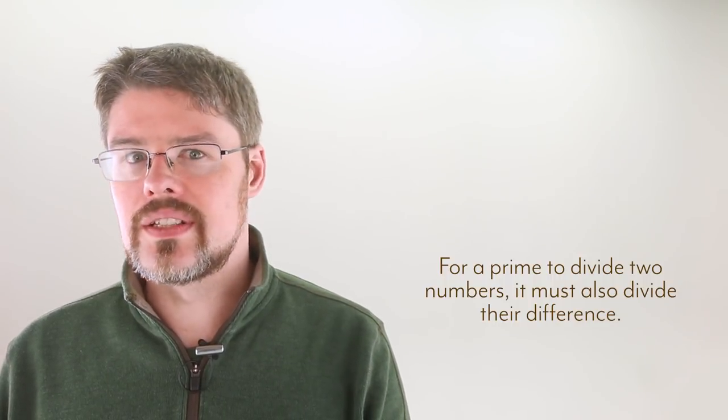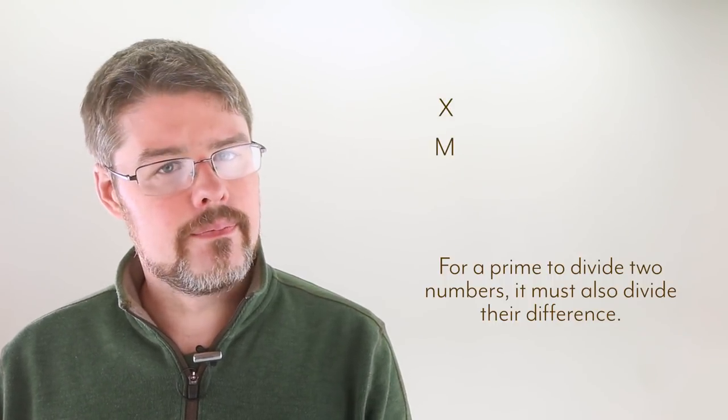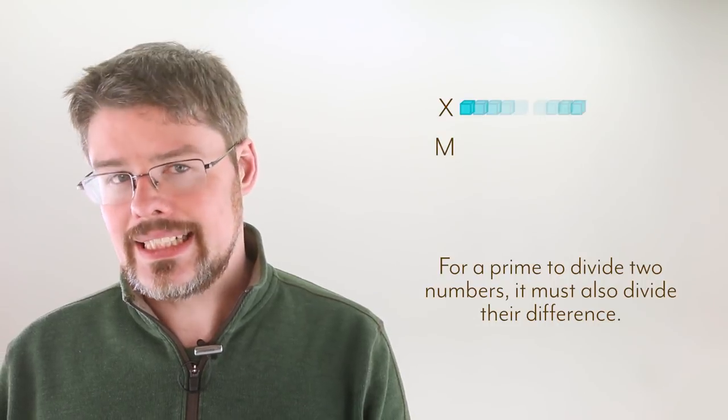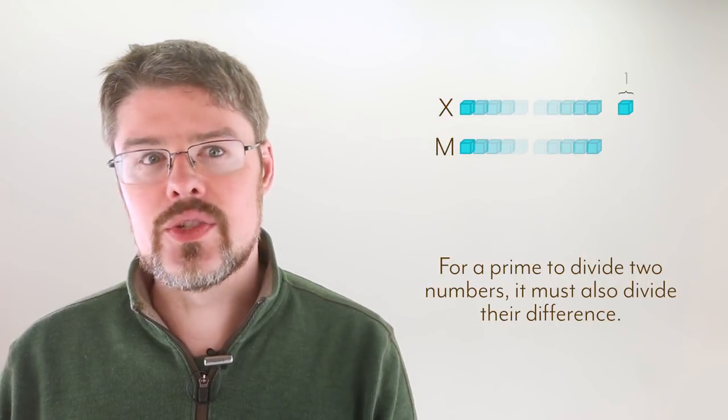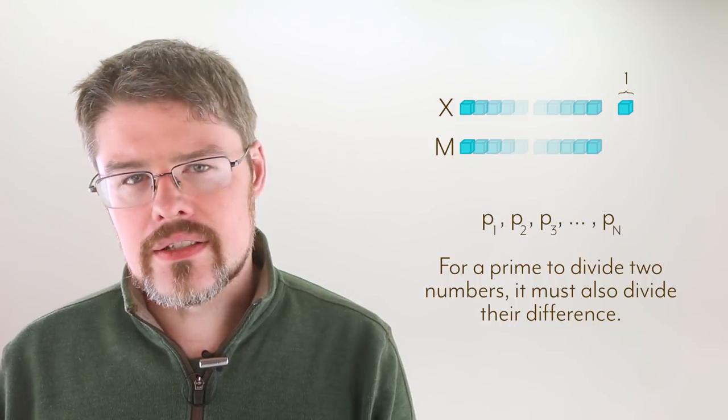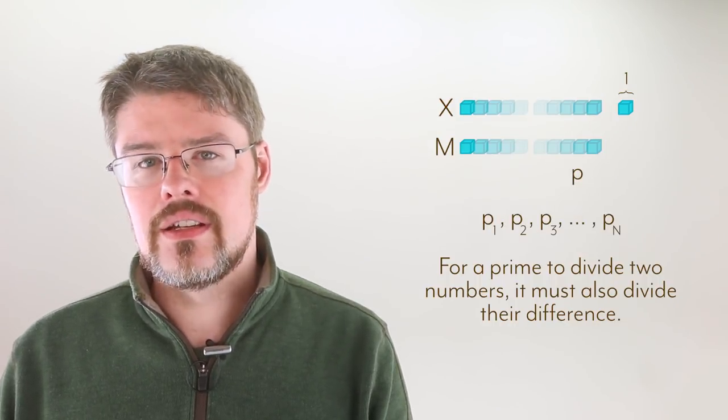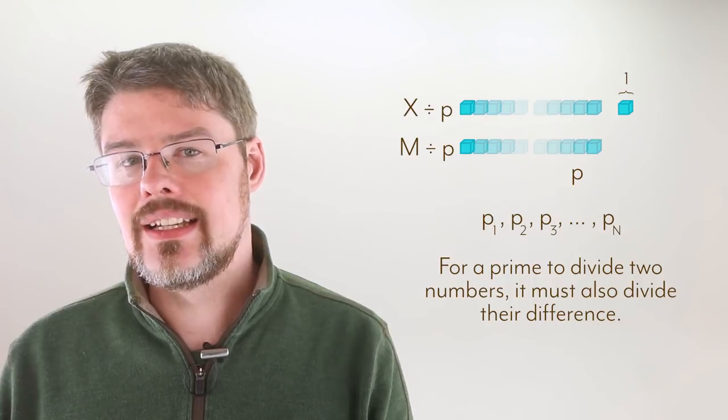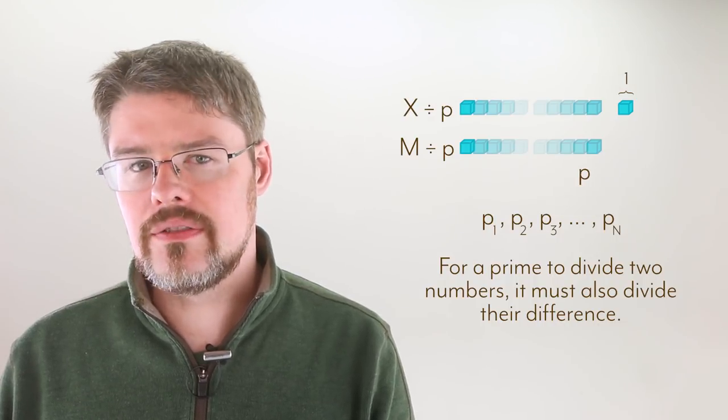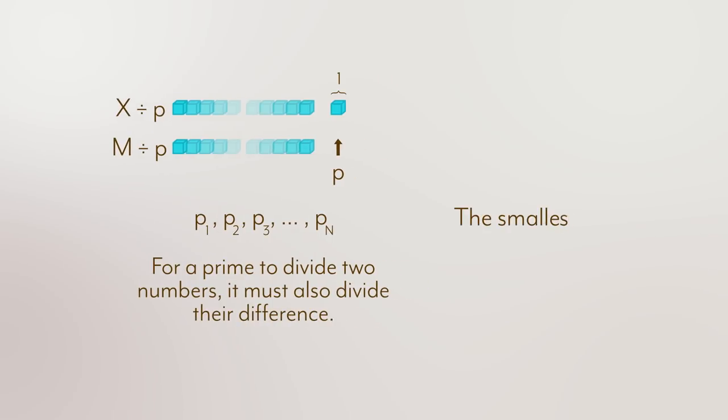So what's the difference between x and m? Well, remember that x is m plus 1. The difference is 1. That means that for some prime on that list, to divide both m and x, it must also be able to divide 1. And because the smallest prime is 2, and certainly nothing bigger will fit, no prime will ever fit.